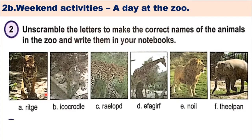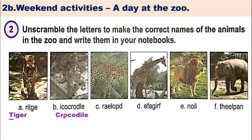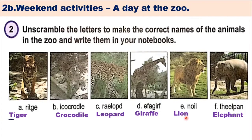Number 1: Unscramble the letters to make the correct names of the animals in the zoo. Number 3: Unscramble the letters to make the correct names of the animals in the zoo. Picture D: giraffe. Picture E: lion. Picture F: elephant.